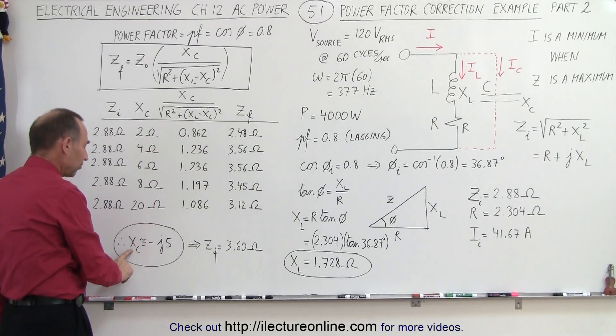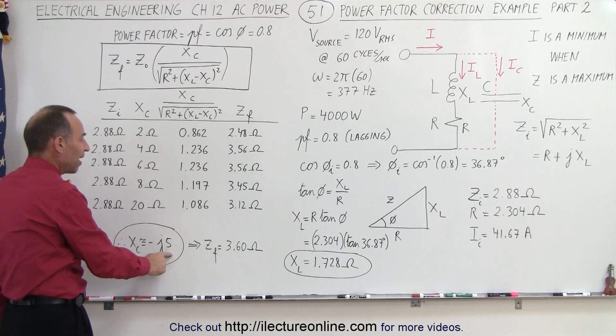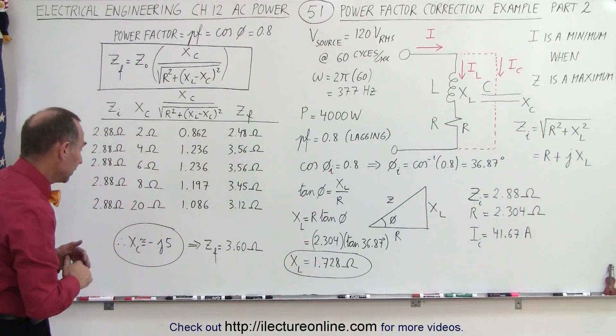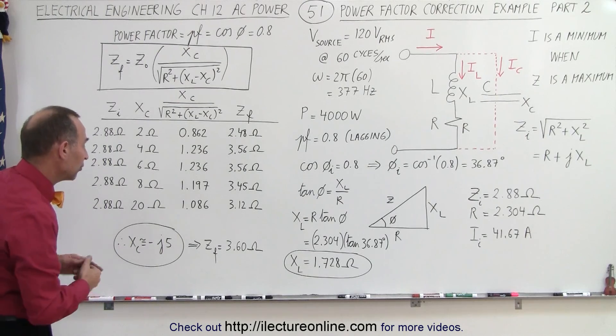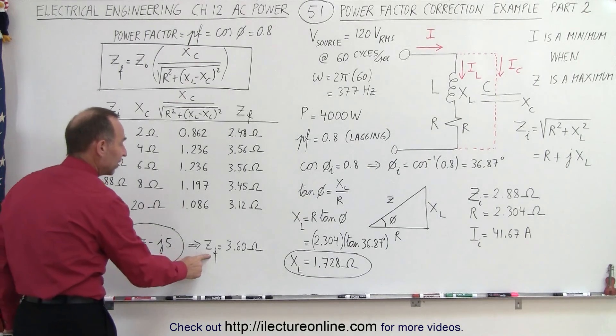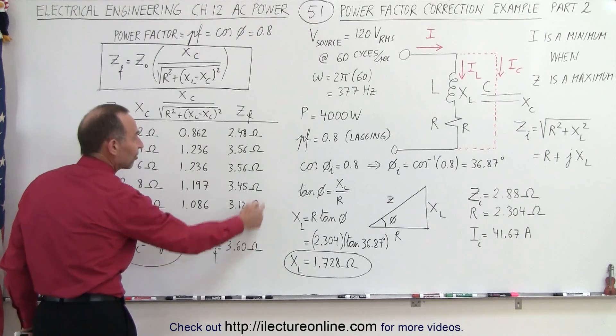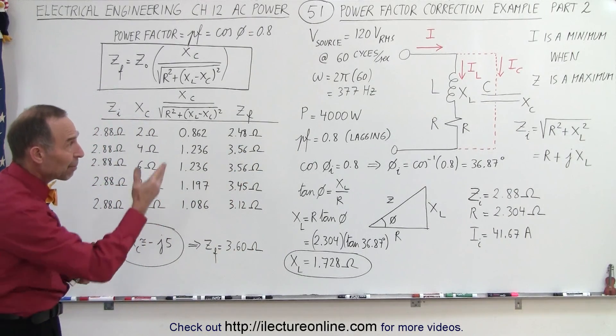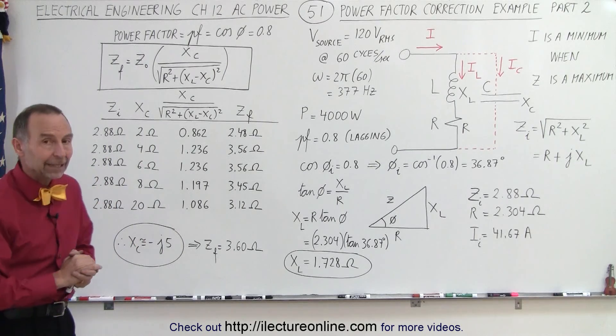And therefore if we have capacitive reactance equal to -j5, when we put it in the real and imaginary components, then we can see that the final impedance would be 3.6 ohms. That's the maximum impedance we can have when we put the correct capacitor in parallel.